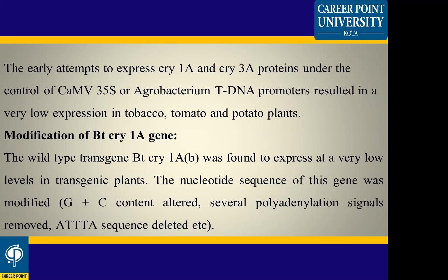The early attempt expressed cry1A and cry3A proteins under the control of Agrobacterium T-DNA promoter. The cry1A and cry3A protein expression under the Agrobacterium T-DNA promoter in tobacco, tomato and potato plants was found to be very low.